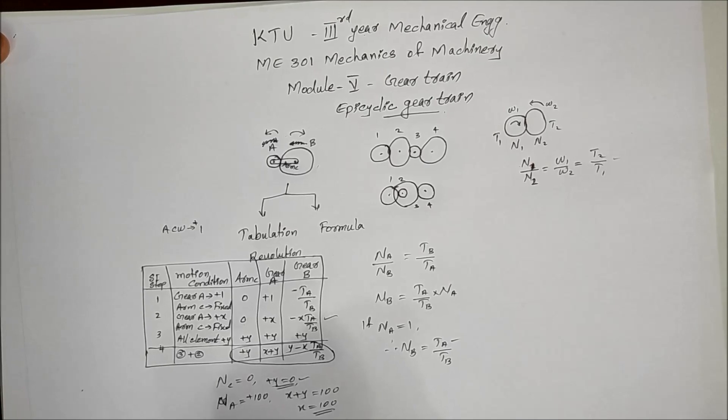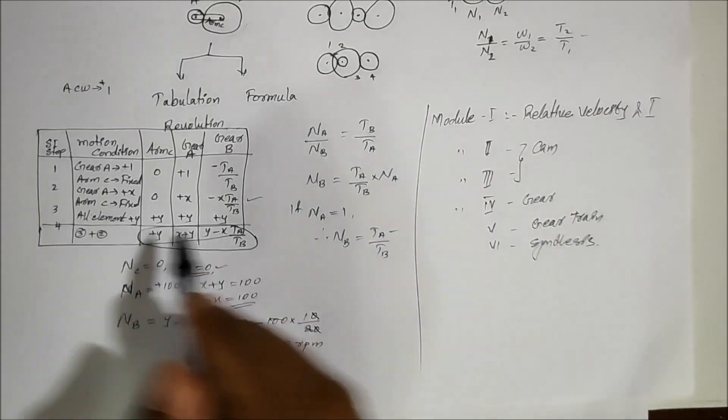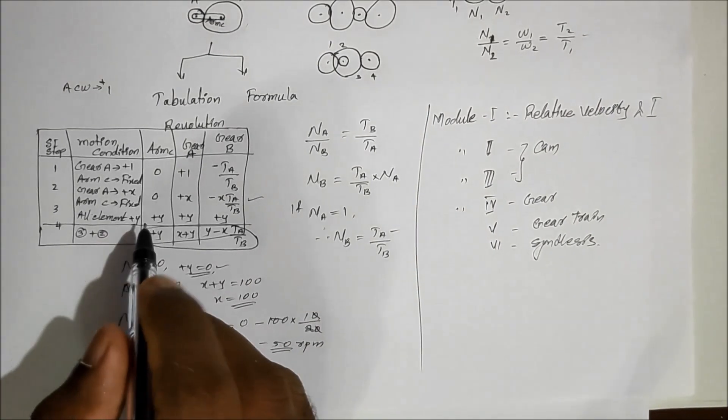Now we will find the speed of Gear B using the tabulation method, applying the 4-step procedure and substituting the known values into the final expression.